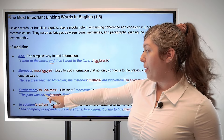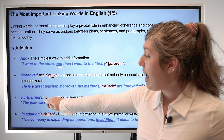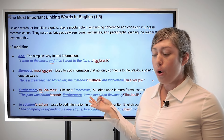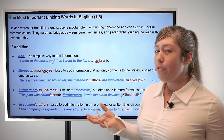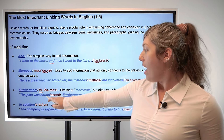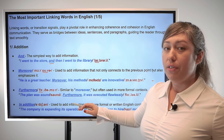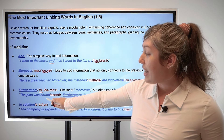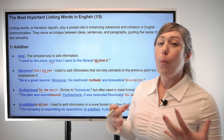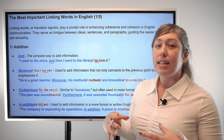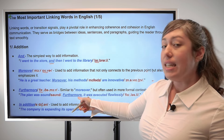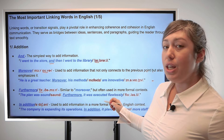Next we have 'furthermore,' with the emphasis on the first syllable, furthermore. It's similar to moreover, but it's used in a more formal context. For example, the plan was sound — meaning it was well thought out and wasn't missing any details. Furthermore, it was executed flawlessly.